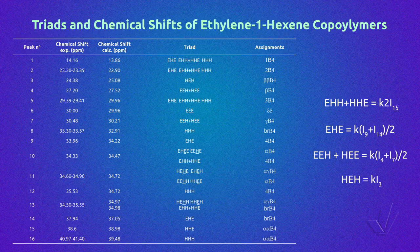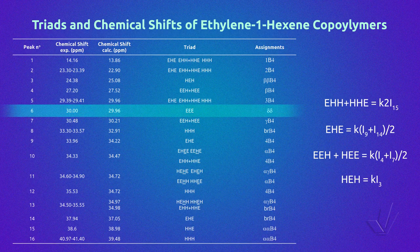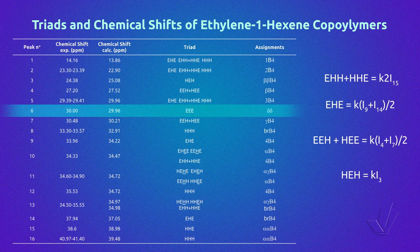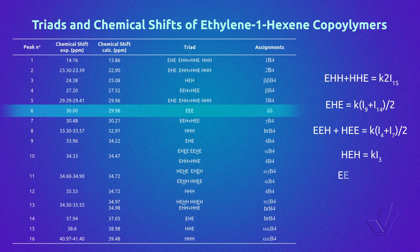Finally, triad EEE is related to peak 6, but as this peak is due to 2 carbon atoms of this triad, we have to divide the integral of this peak by 2 to obtain 1 carbon of the triad.